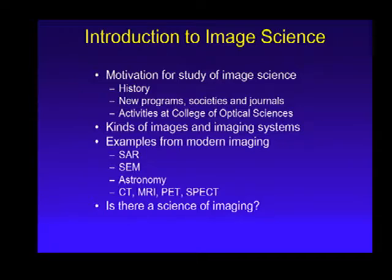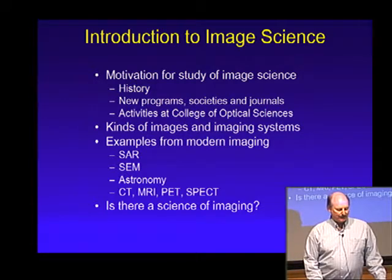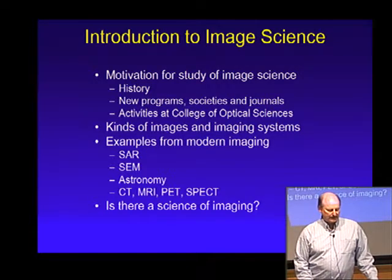A lot of our brain is dedicated to the processing of images and extraction of information from them, and that's the beginning of what image science is about. It's not a term you hear bandied about often in the media, but there is in fact a formal field of image science, with journals, societies, meetings, and programs. The activities at the College of Optical Sciences are probably right alongside one of the East Coast programs as one of the few areas that really goes into depth in image science as integrated with optical sciences.